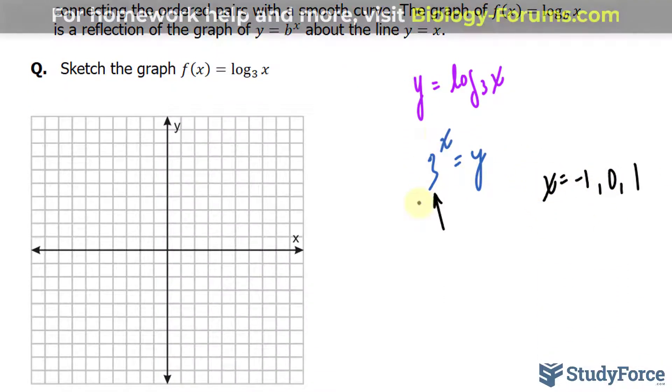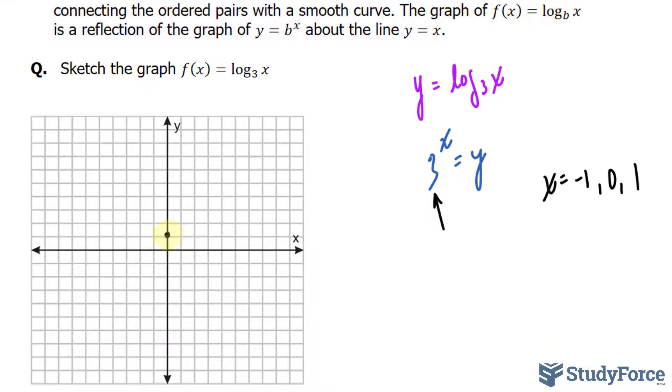If I substitute 0 into my function, I get 3^0 = 1, so I have a value at (0, 1). I'll also have a value at, if I substitute x = 1, (1, 3). If I substitute -1, I get (-1, 1/3). So my function should look like this.